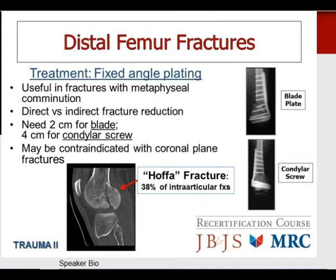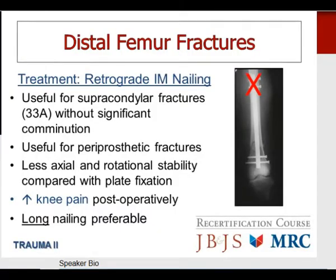Retrograde nailing of distal femur fractures is appropriate for supracondylar (33A) fractures without significant comminution, and for periprosthetic fractures where the posterior cruciate ligament has been spared. However, compared with plate fixation, this technique has less axial and rotational stability and an increased incidence of knee pain. When using a retrograde nail for a distal femur fracture, use a long nail with locking at or above the level of the lesser trochanter proximally.